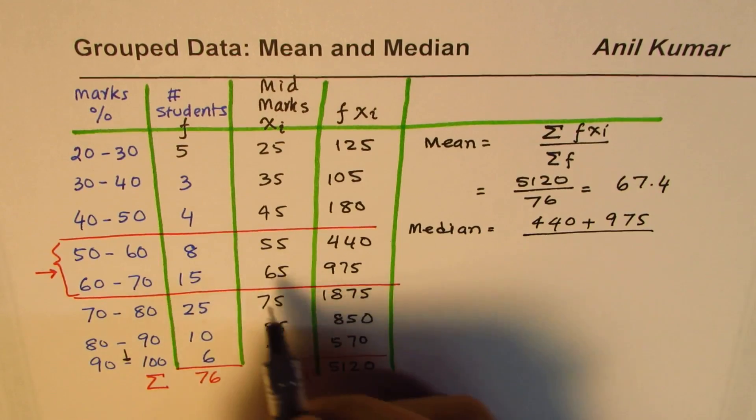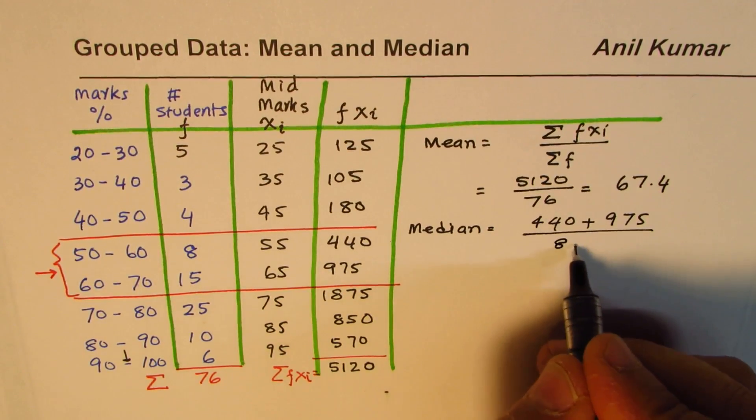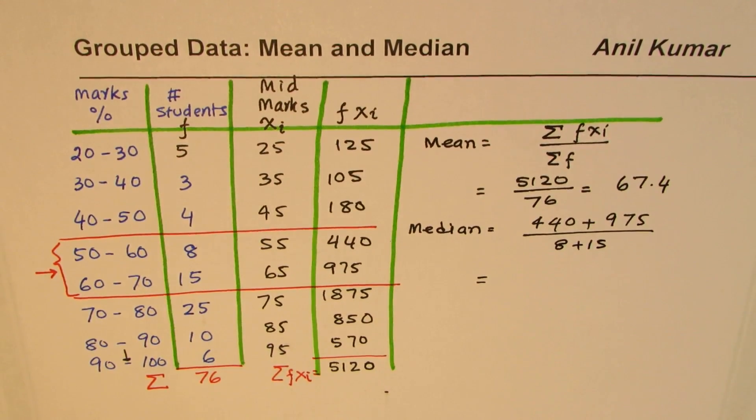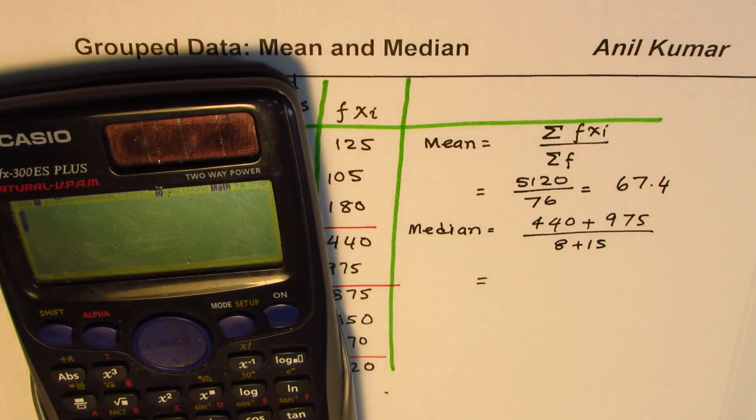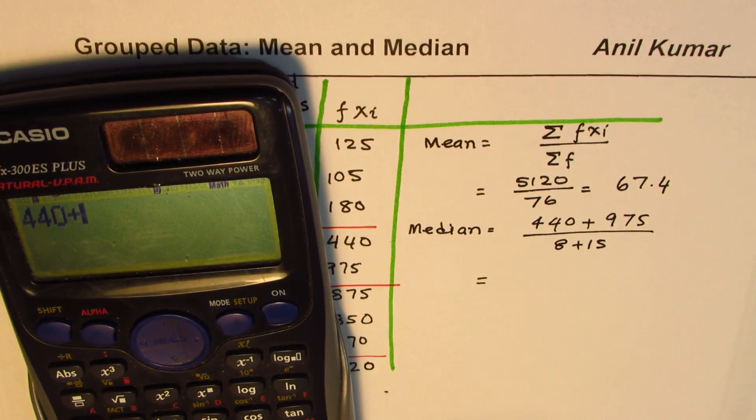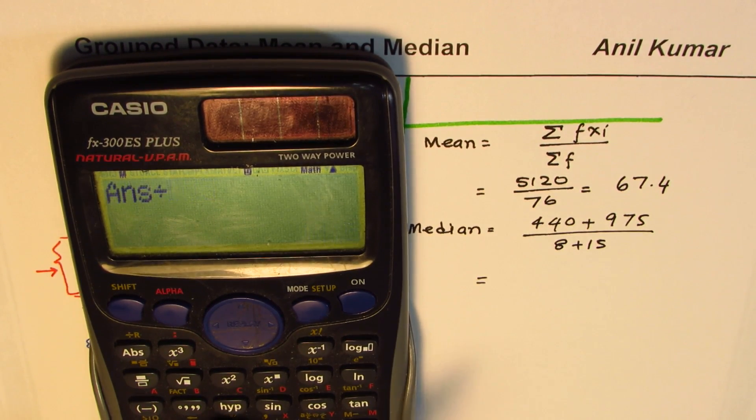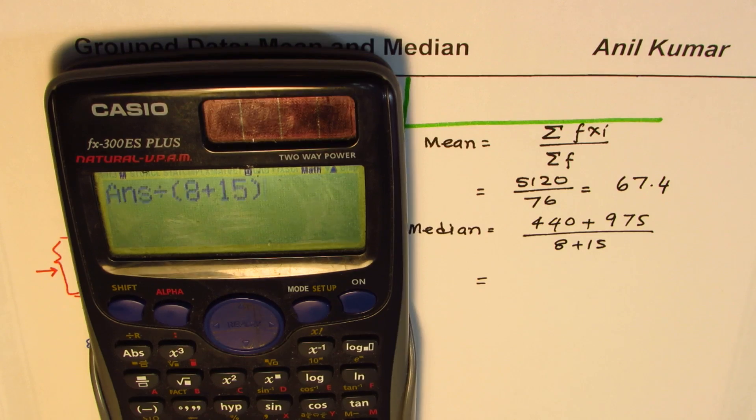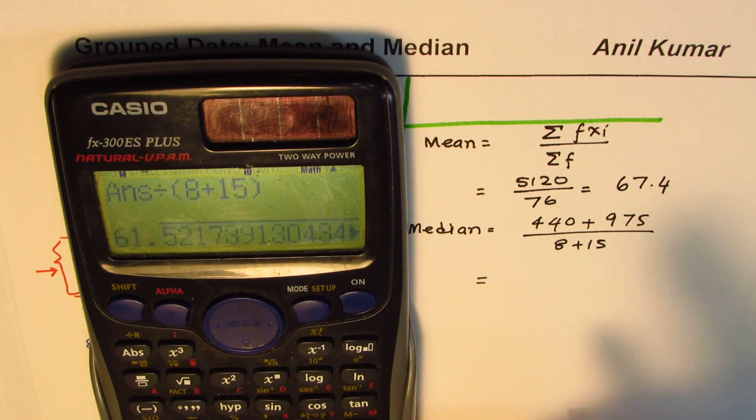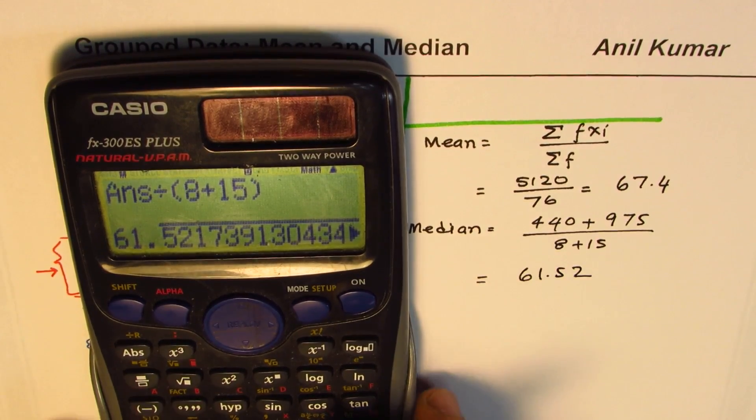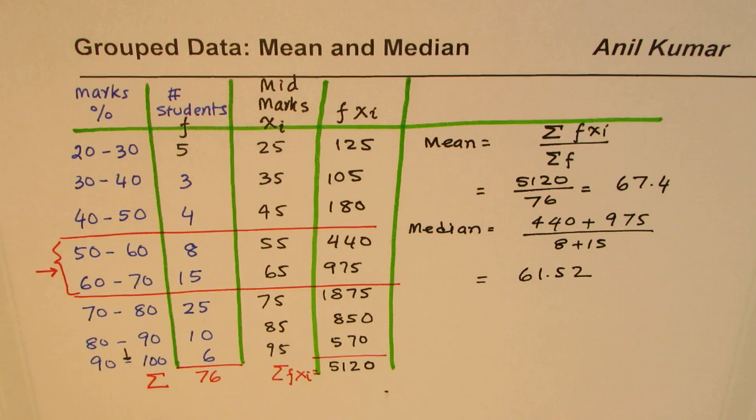To find this median, since it's grouped data, we'll add these two which is 440 plus 975 and divide by the total number of students in this group which is 8 plus 15. Let's calculate this: 440 plus 975 divided by 8 plus 15 equals 61.52 in decimals.